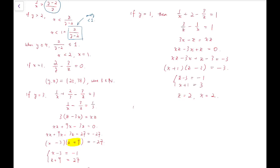And finally, if y is 2, then 1 over x plus 1 minus 3 over z equals 0. So 1 over x equals 3 over z.